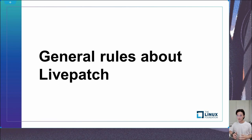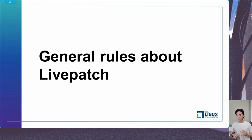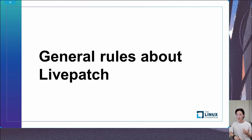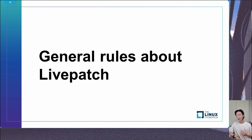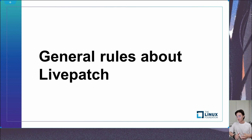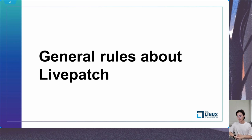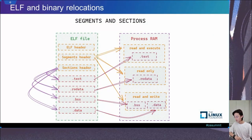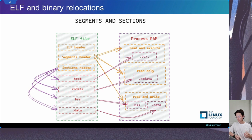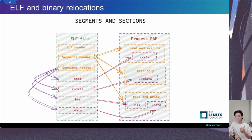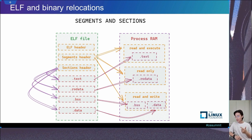So, what are the general rules about a live patch? Basically, we need three steps to implement the live patch mechanism: build the patch, load the patch, and apply the patch. ELF has three main types: relocatable files, executable files, and shared object files. A relocatable file is an intermediate format. After the link stage, several relocatable files can become executable or shared object files.